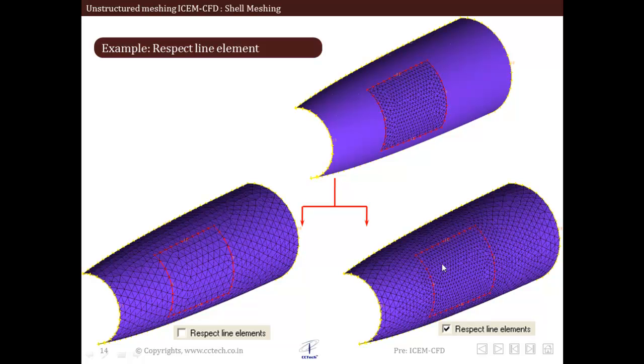But in case 2, we can see that when respect line element was activated, original surface mesh patch was unaltered and the remaining surface was meshed with new parameters.